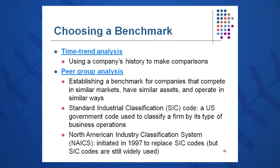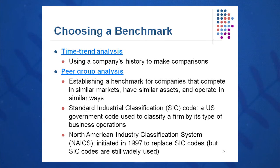We can also look at peer group — how are we doing relative to our peers? We can look by SIC code, which is now called NAICS code, the North American Industry Classification System, which replaced SIC codes in 1997. We can look at how our peers are doing within our standard industrial classification.